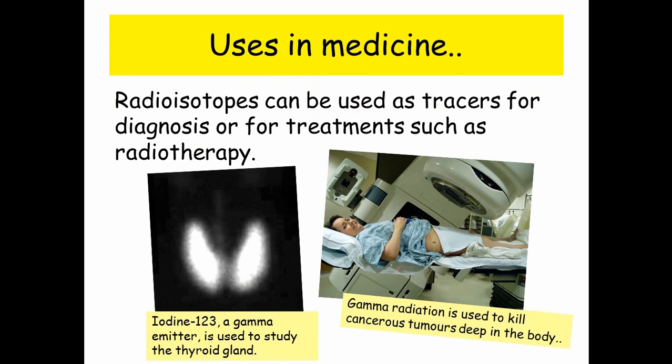In the photograph on the left, you can see a picture of a person's thyroid. That person's been injected with a salt containing iodine-123. This is a gamma emitter, and it's used to study the thyroid gland. The reason they use a gamma emitter is because it will penetrate out of the body and into the gamma camera. Gamma radiation can also be used to kill cancerous tumours that are deep inside the body.